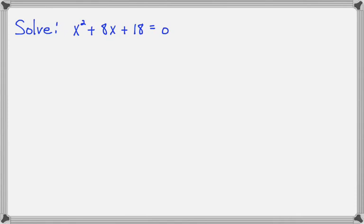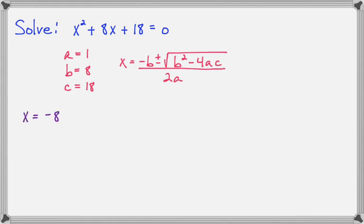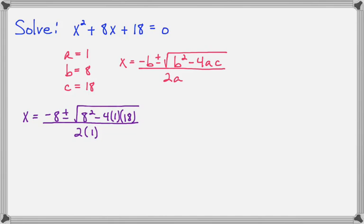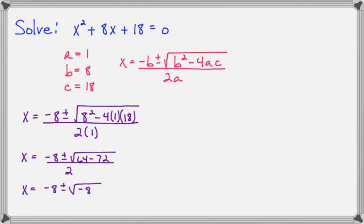Let's do one more example: x squared plus 8x plus 18 equals 0. So a equals 1, b equals 8, and c equals 18. Using the formula, x equals negative b plus or minus the square root of b squared minus 4ac all over 2a. Simplifying under the radical: 8 times 8 makes 64, and 4 times 1 times 18 makes 72, with 2 in the denominator. Now 64 minus 72 is negative 8. We cannot leave a negative under the radical, so we need to simplify using imaginary numbers.